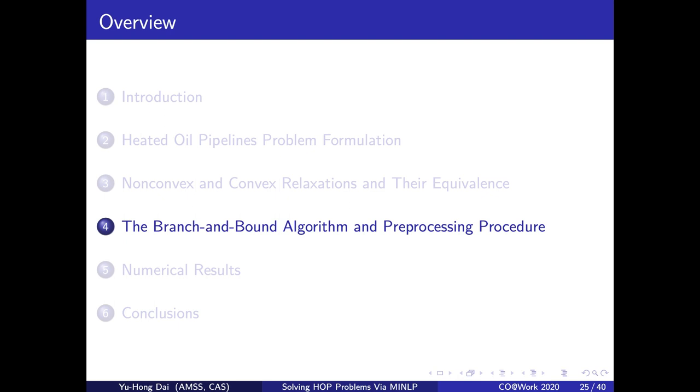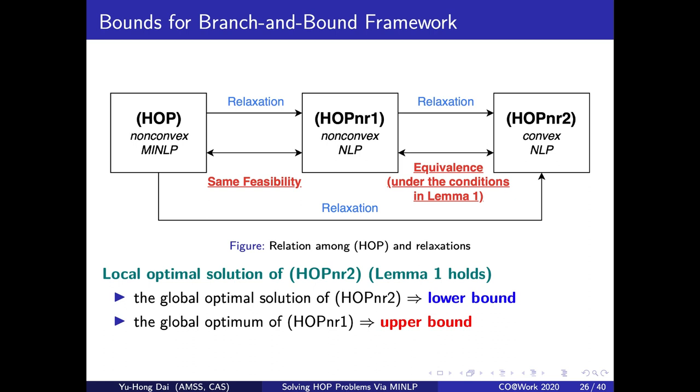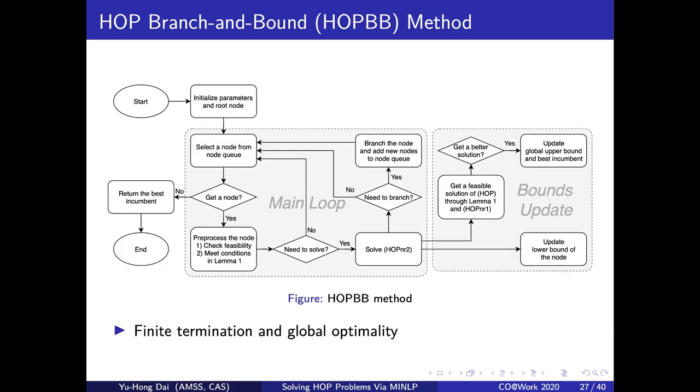With the formal analysis, we can obtain both lower and upper bounds of HOP by solving the convex relaxation HOPnr2. This is because the global optimal solution of HOPnr2 is definitely a lower bound of HOP. And if the equivalence conditions hold, we can simultaneously obtain the global optimal of HOPnr1, which will provide an upper bound of HOP. Combining this with the branch and bound framework, we get our HOPBB method. We can prove that the HOPBB method can terminate finitely and get the global optimal solution if the problem is feasible.